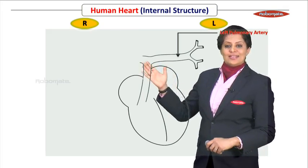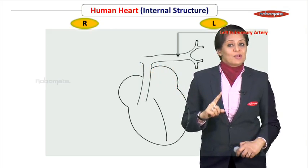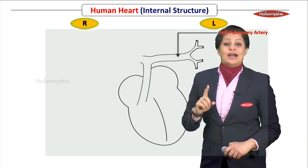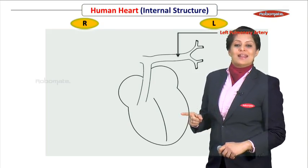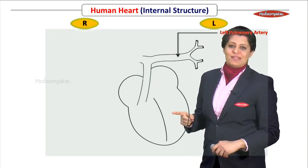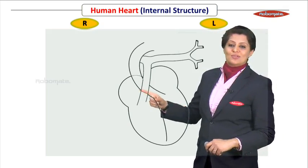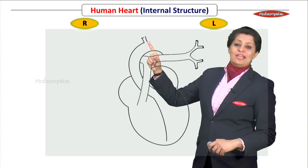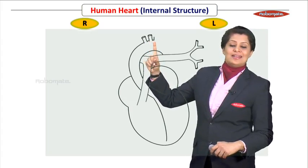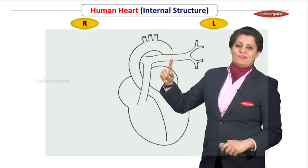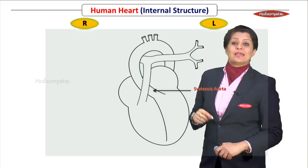As for the right side, we are not drawing it right now because we need to draw another vessel first — the vessel arising from the left ventricle. This is your systemic aorta, arching beautifully. Draw three branches here and then curve it down. This is your systemic aorta.